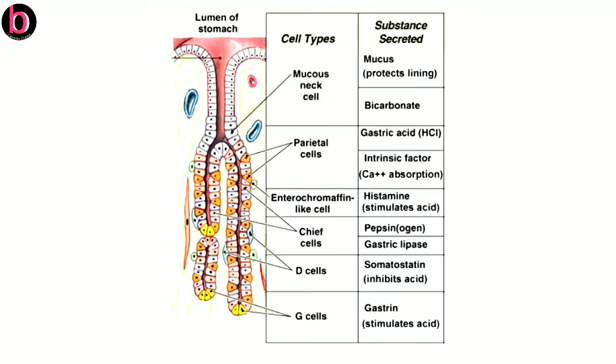The second cell type is parietal cells. Parietal cells secrete gastric acid, that is hydrochloric acid or HCl. Parietal cells are also known as oxyntic cells. Along with HCl, there is also secretion of Castle's intrinsic factor, which is a type of glycoprotein that helps in absorption of vitamin B12 as well as calcium ions.